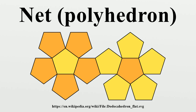The geometric concept of a net can be extended to higher dimensions. For example, a net of a four-polytope: a four-dimensional polytope is composed of polyhedral cells that are connected by their faces and all occupy the same three-dimensional space, just as the polygon faces of a net of a polyhedron are connected by their edges and all occupy the same plane. The net of the tesseract, the four-dimensional hypercube, is used prominently in a painting by Salvador Dalí, Crucifixion.